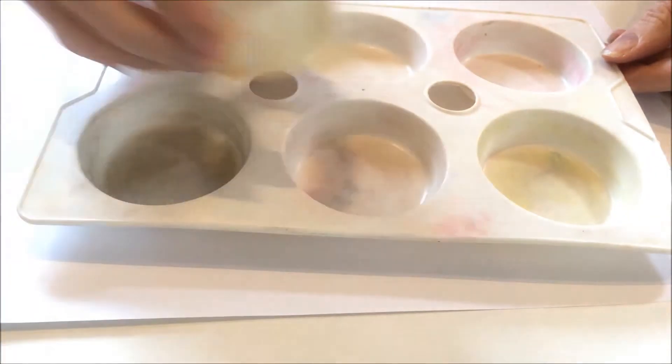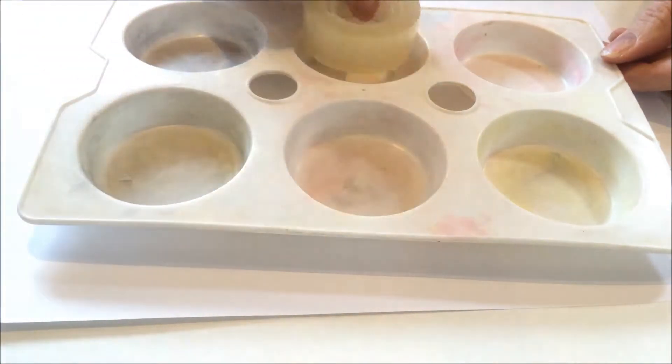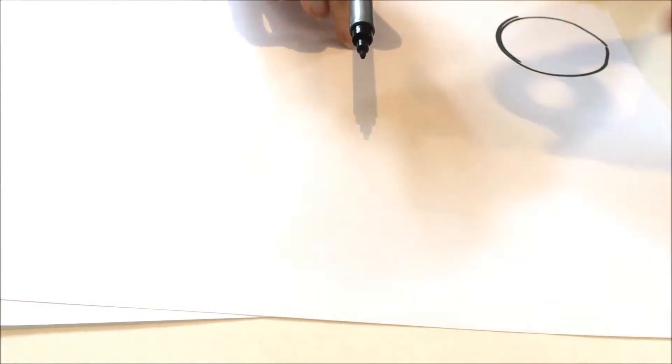Next, take your paint palette and check that your circular object will fit inside the cups of the palette. Take a fresh sheet of computer paper and use your circular object as a template to draw around. Make several copies.